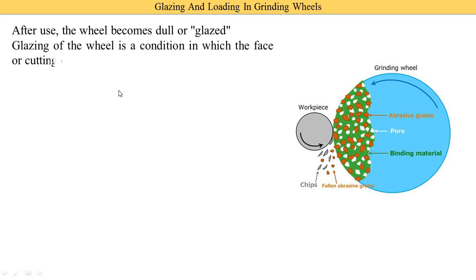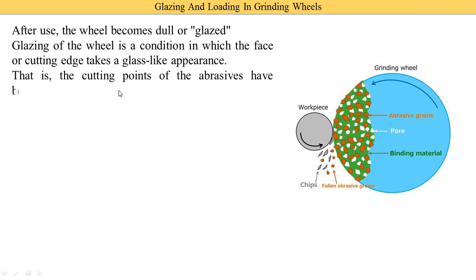Glazing of the wheel is a condition in which the face or cutting edge takes a glass-like appearance — the surface is completely smooth like glass, which is why it is called glazing. The abrasive grains become dull, and the cutting points of the abrasive have become dull and worn down to the bond.